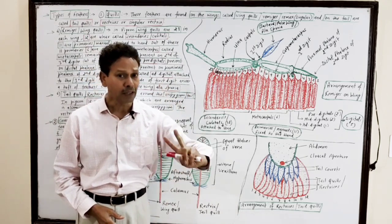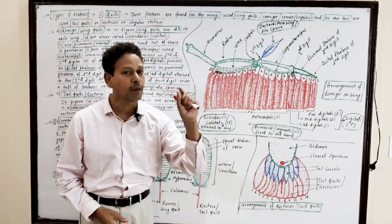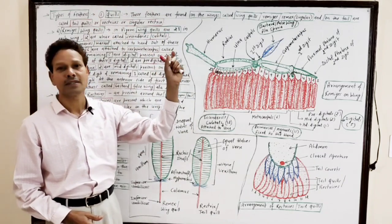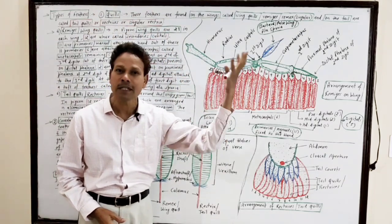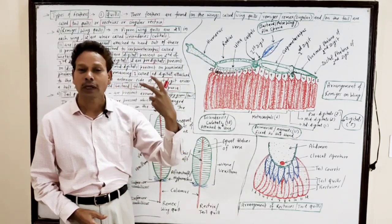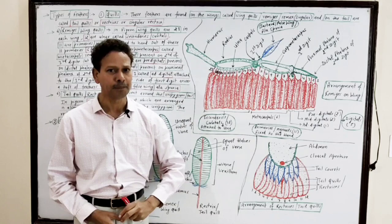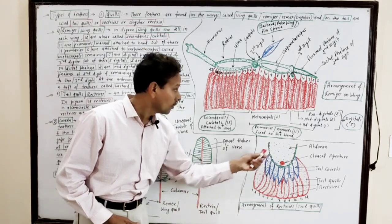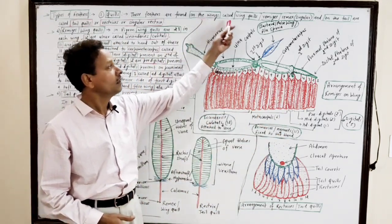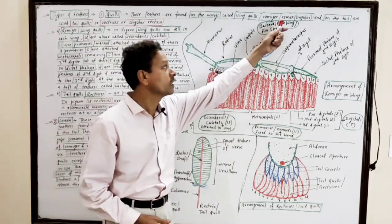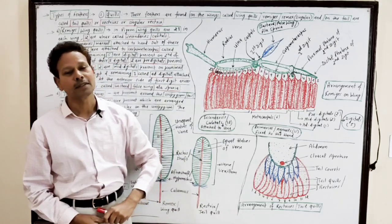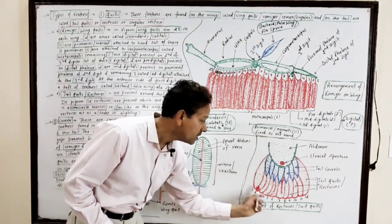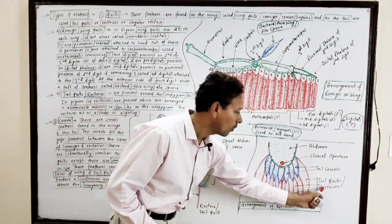In this lecture, I will cover the different types of feathers. The first type is quills. Quills are present on wings and tail. The quills present on wings are called wing quills or ramages. The quills present on the uropygium tail region are called tail quills or rectrices.